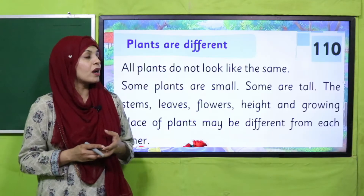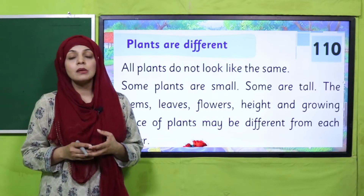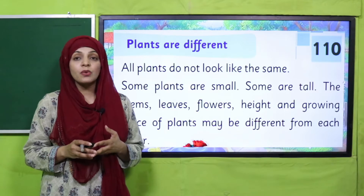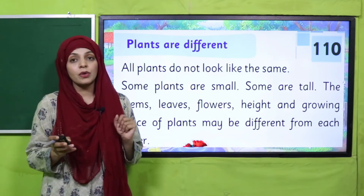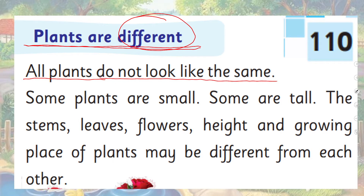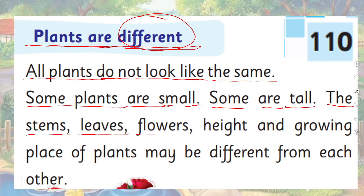Now for reading, please open page number 110 in your GK1 books. Put your fingers where I will read. 'Plants are different. All plants do not look the same. Some plants are small, some are tall. The stems, leaves, flowers, height, and growing place of plants may be different from each other.'